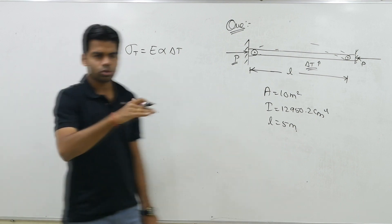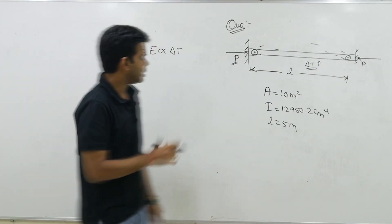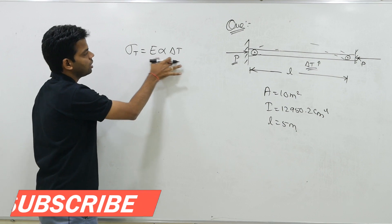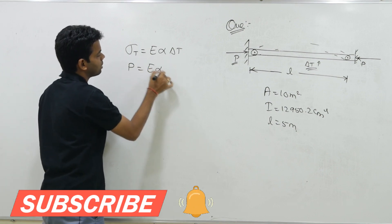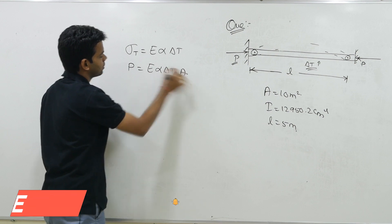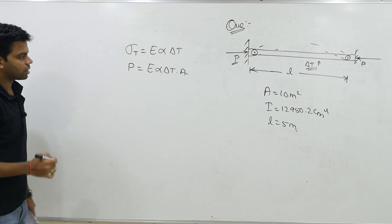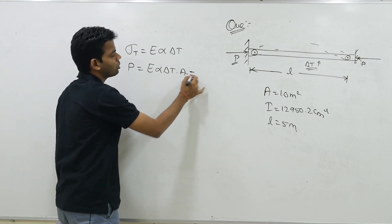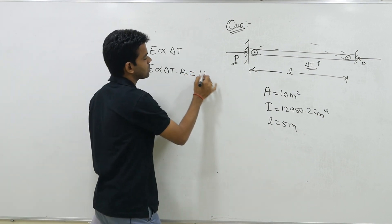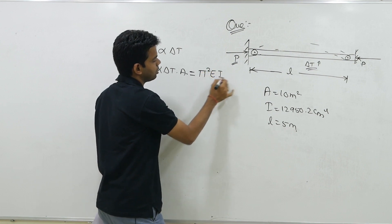Thermal stress ke hum questions, kuch questions solve kiye bhi hain. If you want you can refer those questions. E alpha del t thermal stress ki value hoti hai. So what will be the value of force? So this will be equal to E alpha del t into area. Stress is what? Force per unit area. So into area we have, this will be equal to P ki value. And this P should be equal to the buckling load. Buckling load ki value kya hoti? This is nothing but pi square EI upon L square.